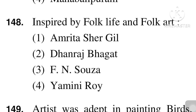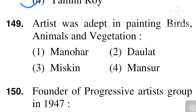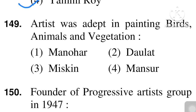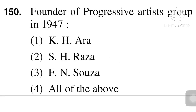Next question: inspired by folk life and folk art — Yamini Rai, of course. Next question: the artist who was adept in painting birds and animals — Manohar, Dolat, Miskin, or Mansoor? Mansoor is the right answer. Last question: founder of the Progressive Artists Group in 1947 in Mumbai — K.H. Ara, S.H. Raza, F.N. Souza — all of these are founders of the Progressive Artists Group in 1947 in Mumbai. Thanks for watching.